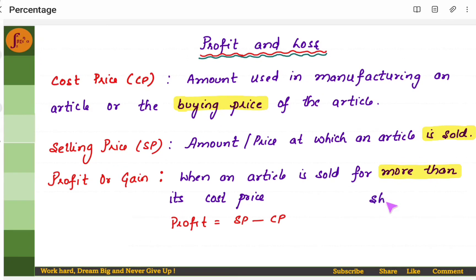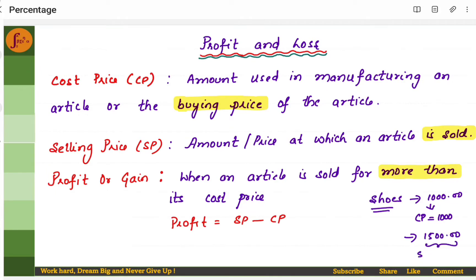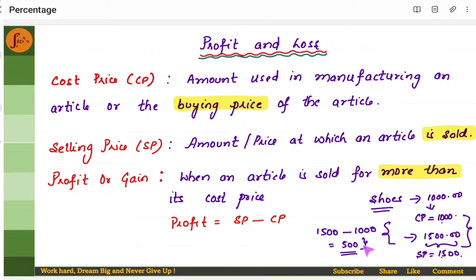For example, let's take the example of shoes. To make a particular pair of shoes, if the amount required is say 1000 rupees, then the cost price is 1000 rupees. If the shopkeeper sells those shoes to the customer at 1500 rupees, this becomes the selling price. So 1000 rupees is the cost price and 1500 is the selling price. He has sold it for more than the cost price, so he has made a profit. The extra money is 500 rupees — 1500 minus 1000 — so this 500 rupees is the profit. Therefore, profit is selling price minus cost price.